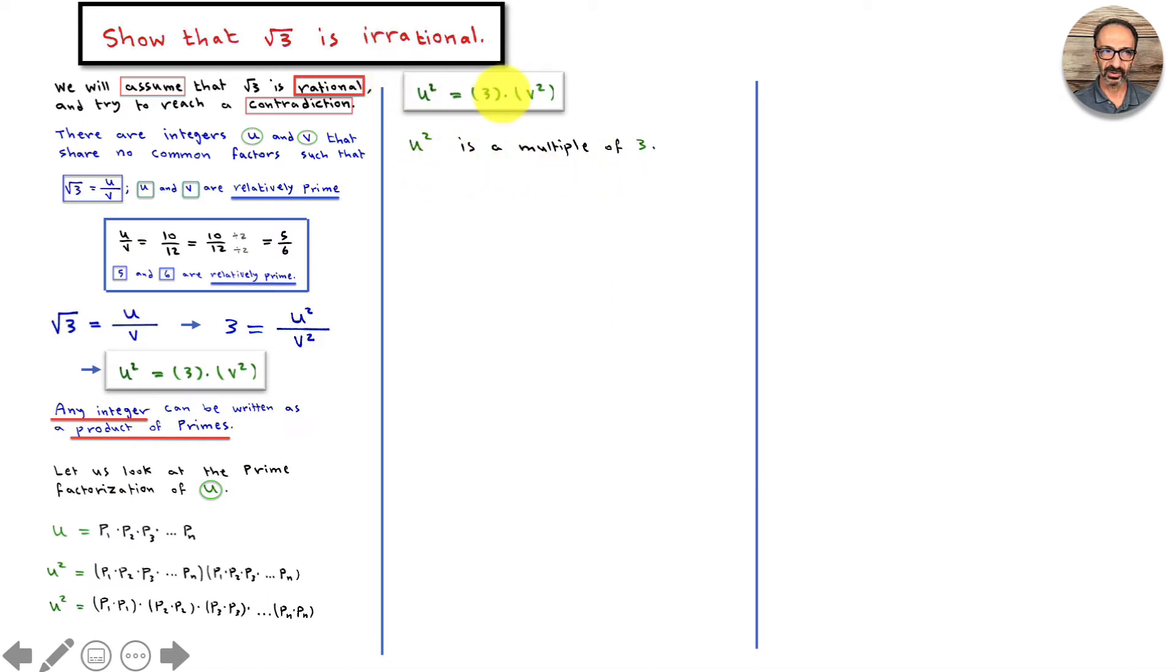u squared is a multiple of 3. We could see that it's 3 times some kind of integer, so 3 must be one of these numbers.